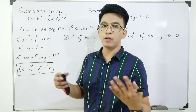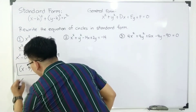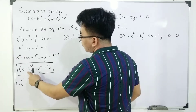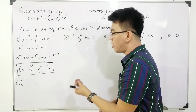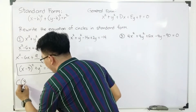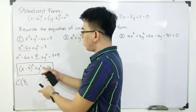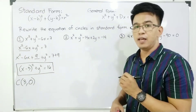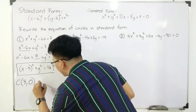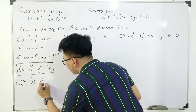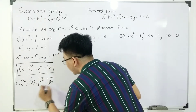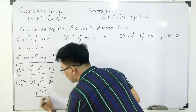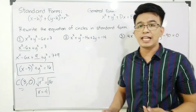Now let's get the center. Since this value is negative three — that is h equals negative three — we take its opposite sign, which is positive three. Since there is no k term, k is equal to zero. For the radius, r squared equals sixteen; taking the square root gives r equals four. So the center is located at (3, 0) and the radius is 4.